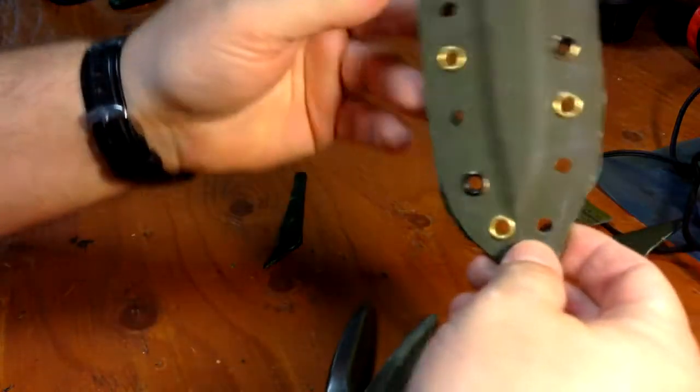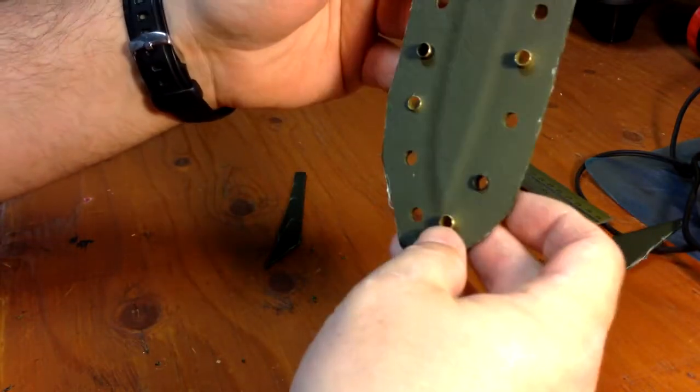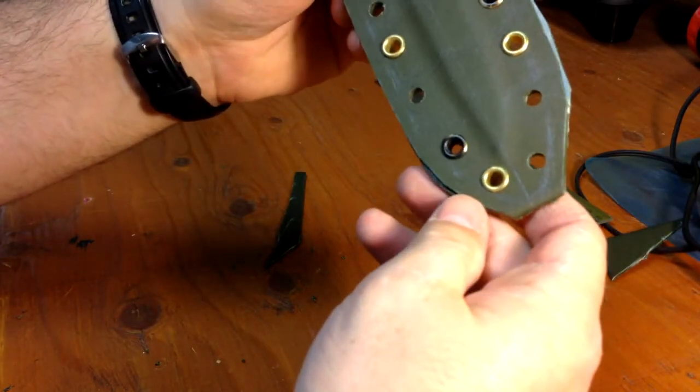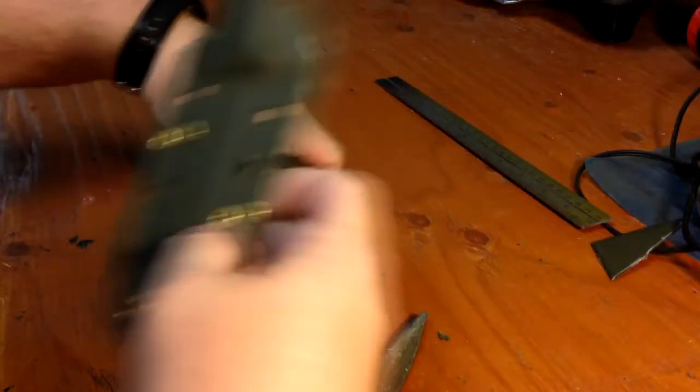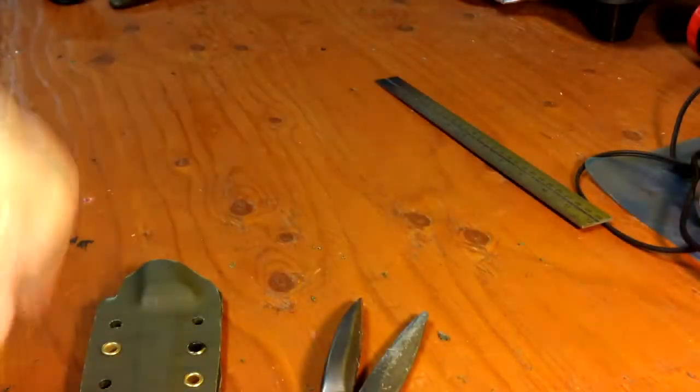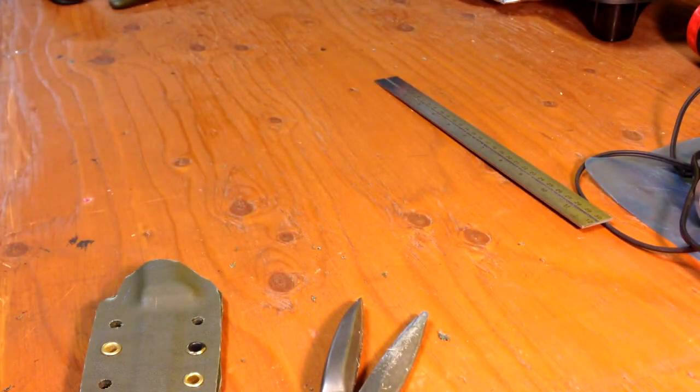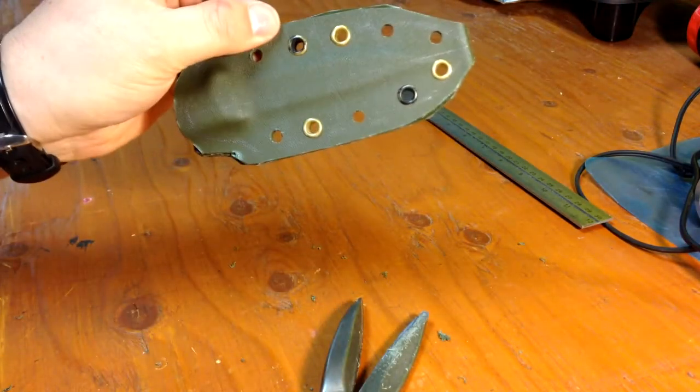Alright, so now we've got the rough shape. All that's left now is to sand out the smooth round edges. I'm going to take the tripod and set up over at the other bench, and then we'll get to sanding.